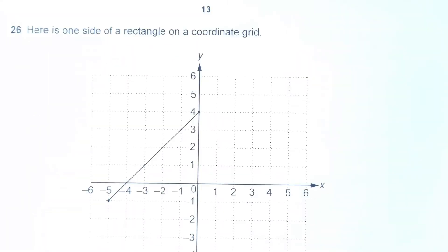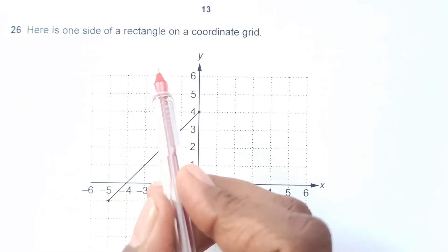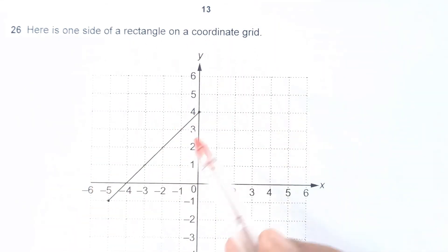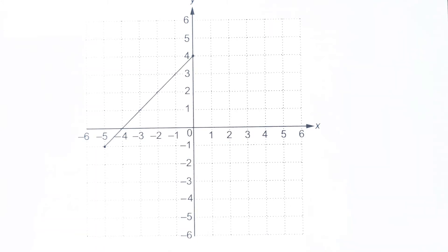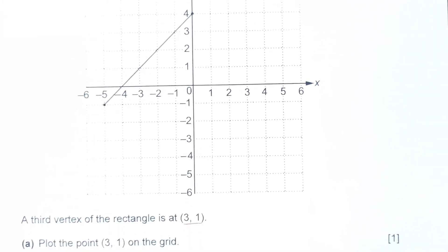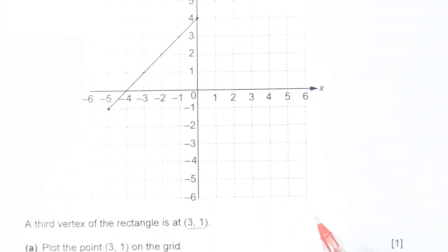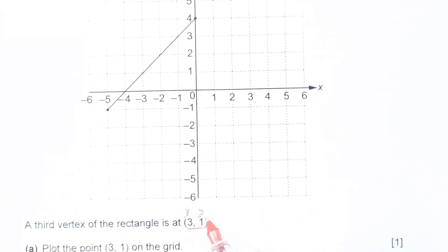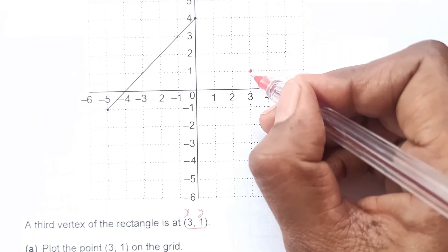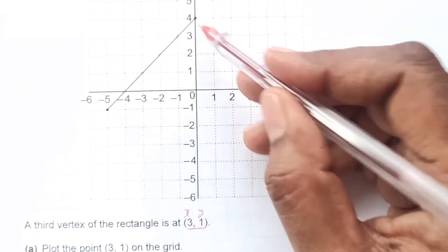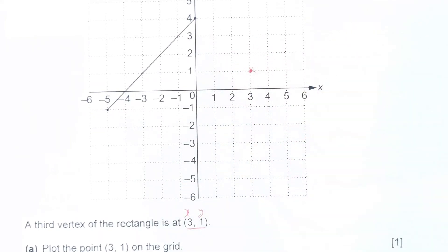Question number 26. Here is one side of a rectangle on the coordinate grid. You can see this side. A third vertex of the rectangle is at (3, 1). Plot point (3, 1) on the grid. 3 for x, this is for x and this is for y. 3, 1, so this is the point. The third vertex. 1, 2, the third one. First part is done.